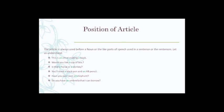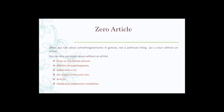Let's see examples: This is an art of reading a book. Would you like a cup of tea? Is that a horse or a donkey? You will need a black pen or an HB pencil. Have you ever seen an elephant? Do you have an umbrella that I can borrow? These are very important sentences. There are some sentences where sometimes you use sentences without articles. But intended use of without articles means that you are using that noun in a very general sense.